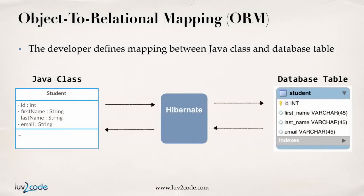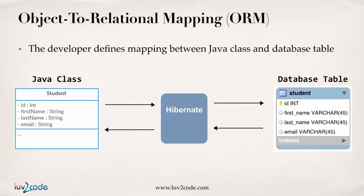So how does it work? Hibernate provides something called the object-to-relational mapping, or ORM. As a developer, you need to tell Hibernate how your Java class or object maps to data in the database — specifically, you map your Java class to a given database table. In this example, on the far left we have our Java class called Student with four fields: ID, first name, last name, and email. Note the camel case for first name and last name. Hibernate sits in the middle, and on the far right we have the actual database table called student, with an ID as the primary key, and columns first_name, last_name, and email address. You tell Hibernate that this Java class Student maps to this given table, and set up the one-to-one mapping between the fields and the columns in the database.